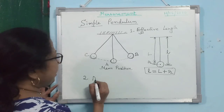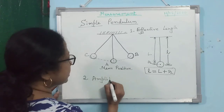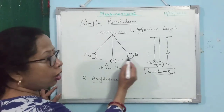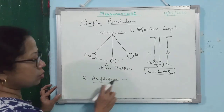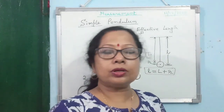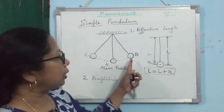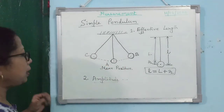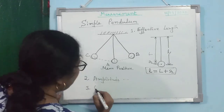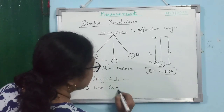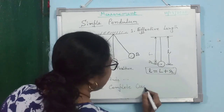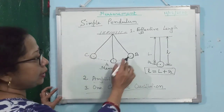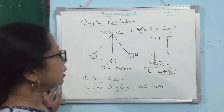The second term is amplitude. Amplitude is the maximum displacement of the pendulum from the mean position on either side. The next important concept is one complete oscillation. One complete to-and-fro motion is known as one complete oscillation.